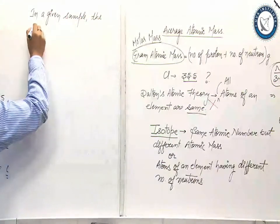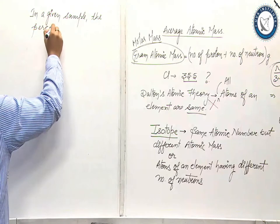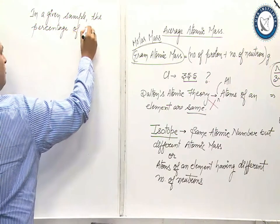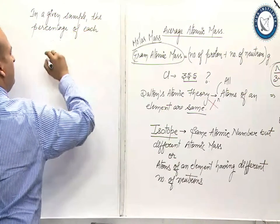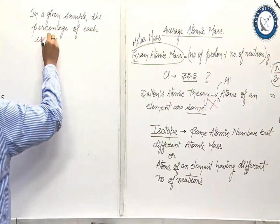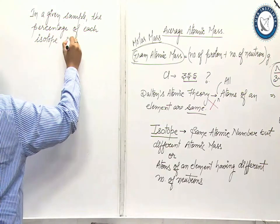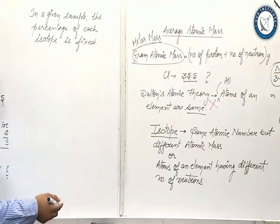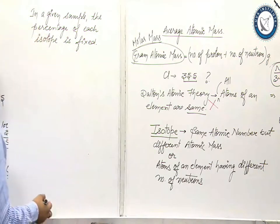In a given sample, the percentage of each isotope is fixed. So this is how God has helped us in calculation of average atomic mass.